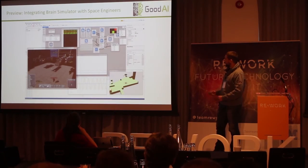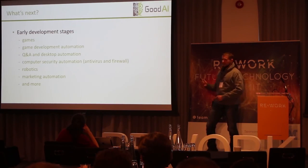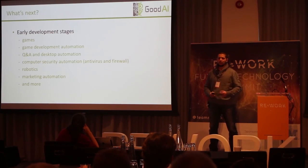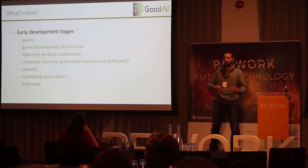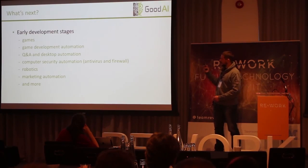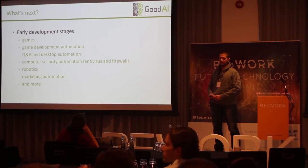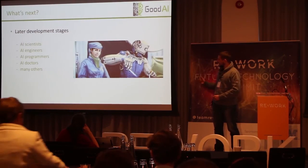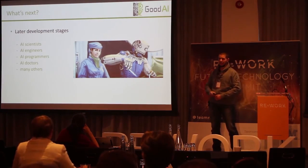This is how the prototype looks — Brain Simulator in the foreground, Space Engineers in the background. One commercial challenge of AGI is that you can only commercialize it while you're still building it; once it's complete, AGI can do whatever you want for you. In the meanwhile, we'll integrate early-stage AGI into our games and find other applications. In the future, we hope AGI will give us AI scientists, AI engineers, AI programmers — basically AI anything.